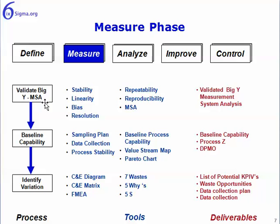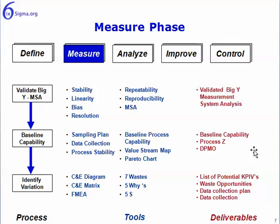In the Measure phase, we've got three steps as well — highlighted at the top. We want to validate the big Y via MSA, baseline the capability of the process, and identify any variation that exists, along with the tools and deliverables. You won't use all of these tools in every project — this is not prescriptive, but it covers most tools you'd expect to use in this phase. Also, tools may be used in other parts of the methodology even if not repeated there.